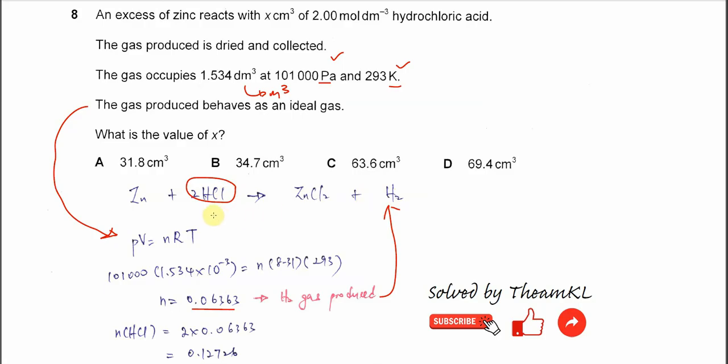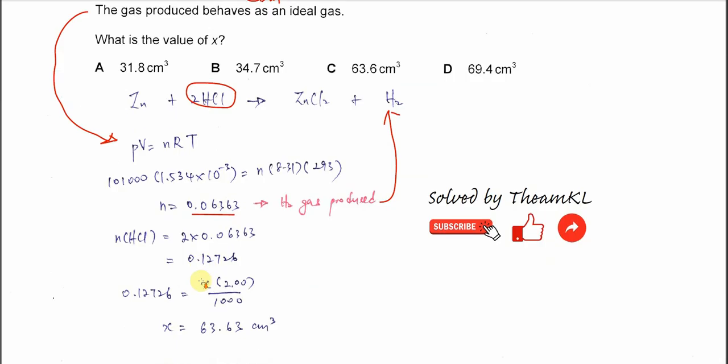Means the moles of the acid that used, it must be double, double amount of the moles of hydrogen. So now we know the moles of the acid is 0.12726. It's two times.